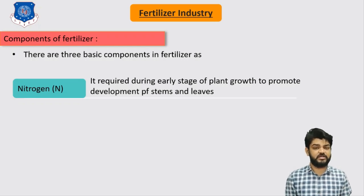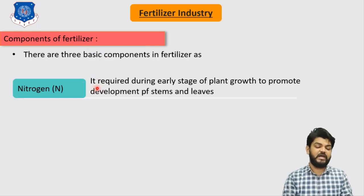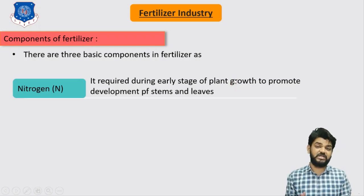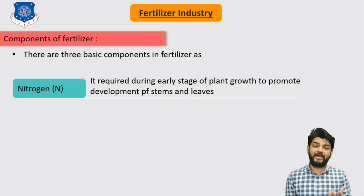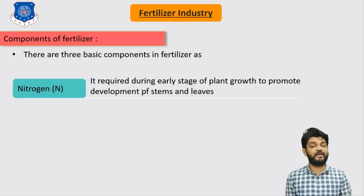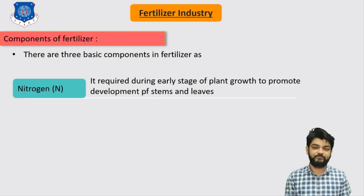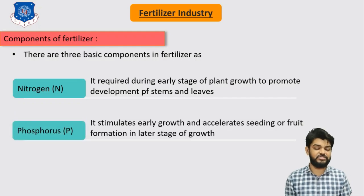Any fertilizer should contain nitrogen, as it is required during the early stage of plant growth. Nitrogen helps in the promotion and development of stems and leaves — for the development of stems and leaves on the plant, nitrogen is always required, and it is very helpful to develop these leaves and stems of different vegetables. The second component is phosphorus.